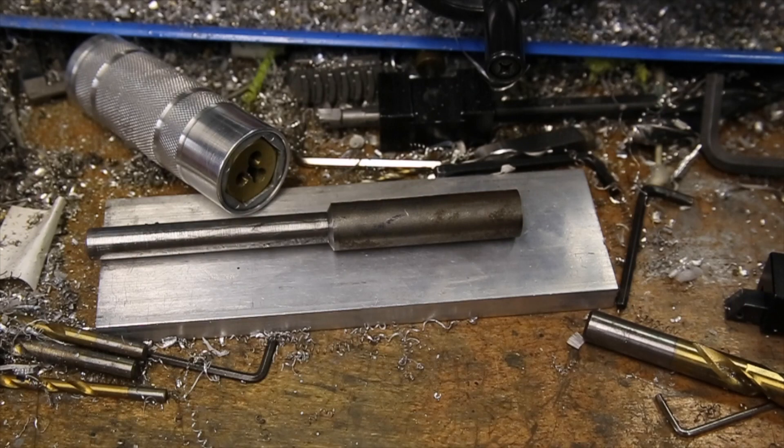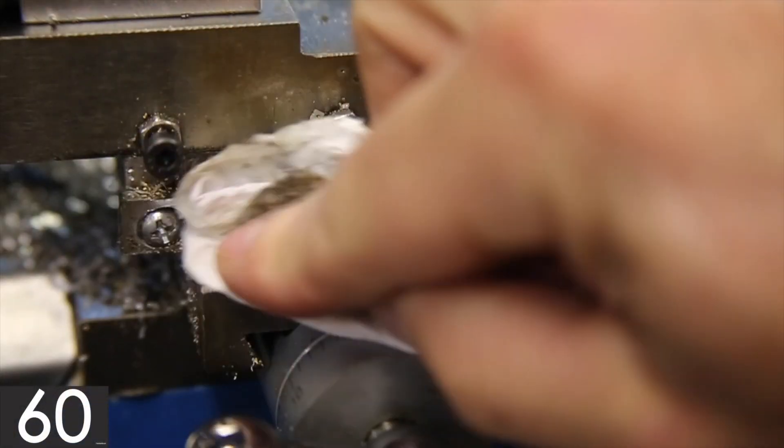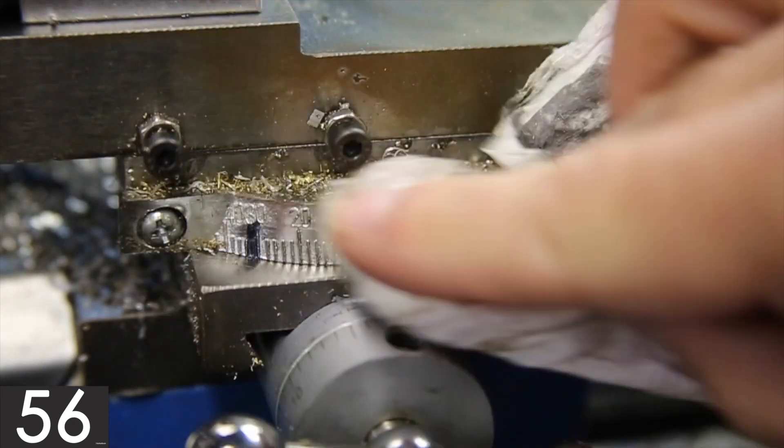I'm going to be using the MT2 size dead center that came with this lathe because it has a few key features that are useful and the angle indicator doesn't have any reference marks.